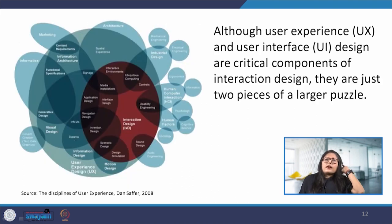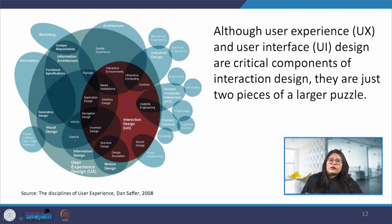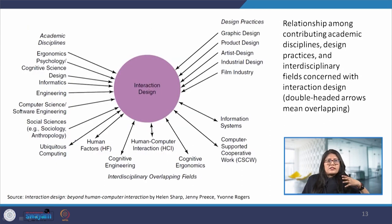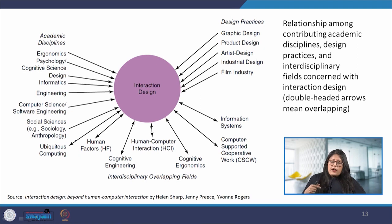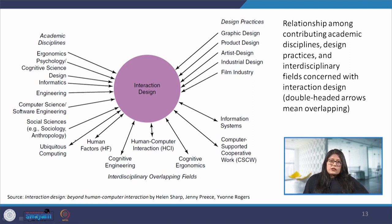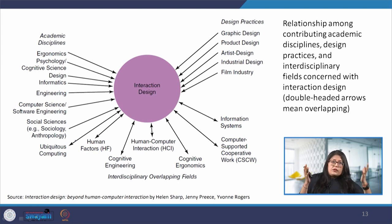We can see that so many different domains are interlinked in creating this ecosystem of design. Several academic disciplines inform interaction design: ergonomics, psychology, design, and informatics. Design practices such as graphic design, product design, and industrial design also inform it. At the same time, areas like human factors, cognitive engineering, cognitive ergonomics, and computer-supported cooperative work both inform and are informed by interaction design. It is truly a big learning space.